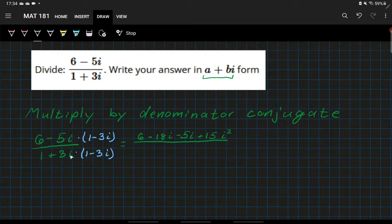And then in the denominator, we multiply conjugates together. We are just left with a squared plus b squared. The a here is one and the b is three, so this is one squared plus three squared.